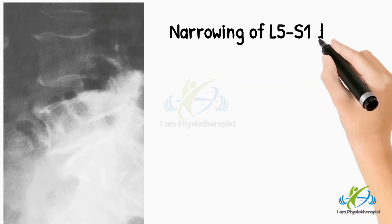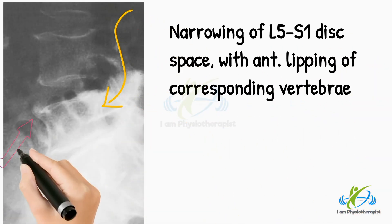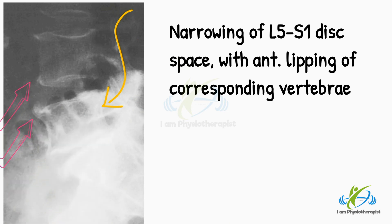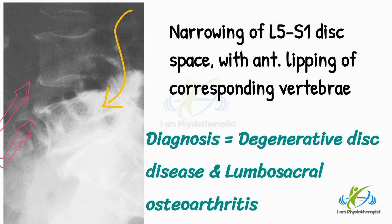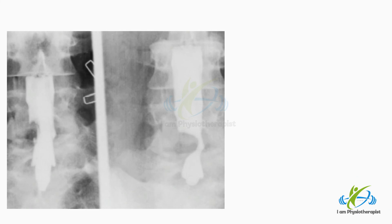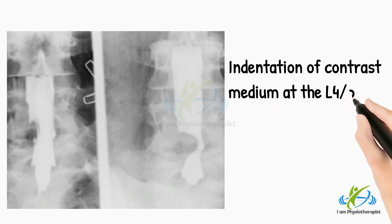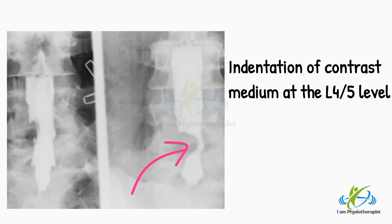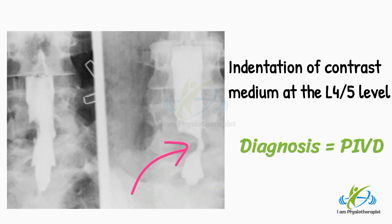In this radiograph, there is narrowing of the L5-S1 disc space with anterior lipping of the corresponding vertebrae. Diagnosis is typical appearance of degenerative disc disease and lumbosacral osteoarthritis. This myelogram of a patient complaining of back and right leg pain showed weakness of dorsiflexion and eversion of the right foot and sensory impairment over the lateral aspect of the calf. The myelogram shows a well-defined indentation of the contrast medium at the L4-5 level. Diagnosis is prolapsed intervertebral disc.